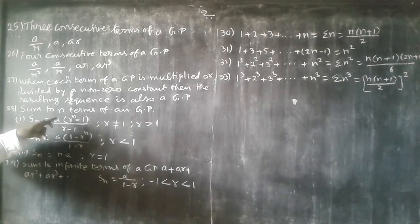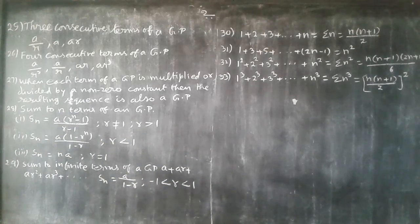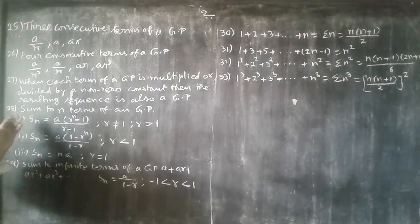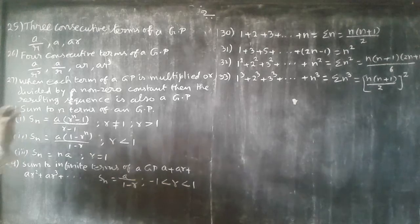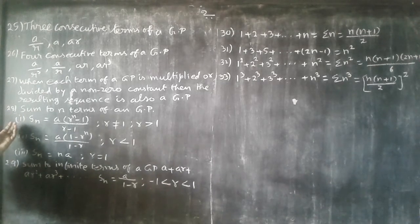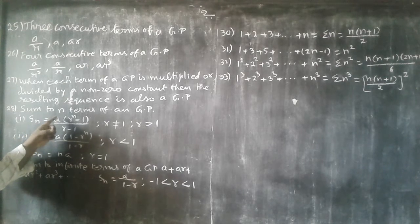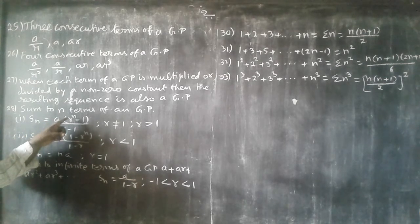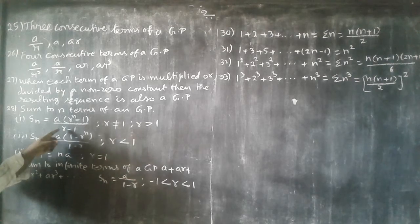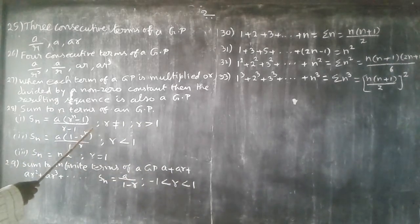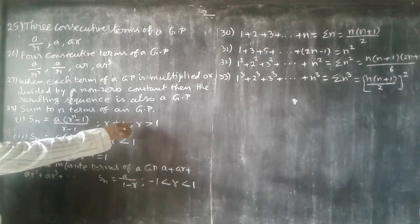28th. Sum to n terms of a GP. The first formula: S sub n is equal to A into R to the power n minus 1 divided by R minus 1, where R not equal to 1 and R greater than 1, where A is the first term and R is the common ratio.